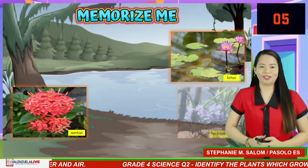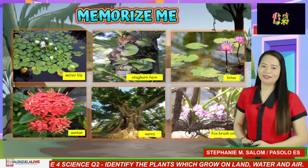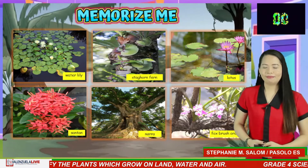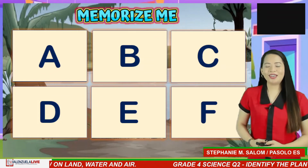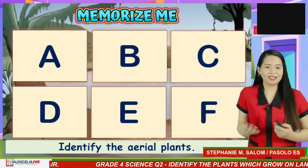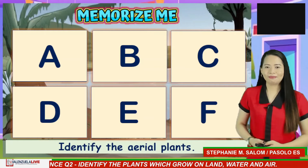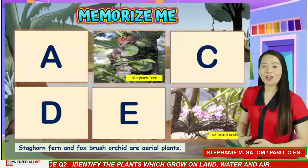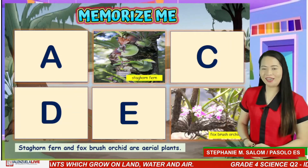Here's the next set of pictures. I will give you 5 seconds to memorize it. Time's up! Identify which of them are aerial plants — those plants that grow in air. Type your answer in the comment box. If you answered B and F — superb! Staghorn fern and foxbrush orchid are aerial plants.